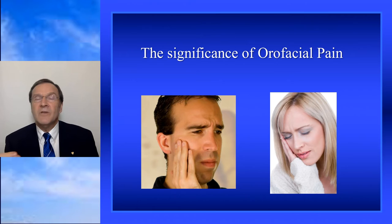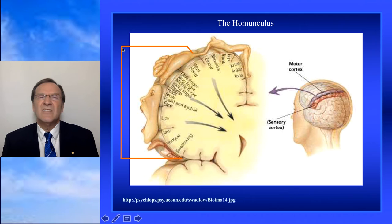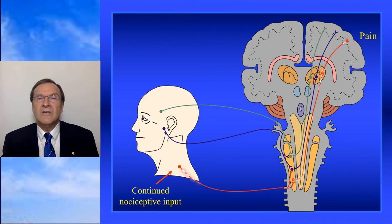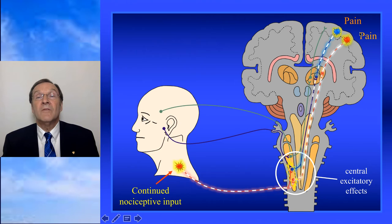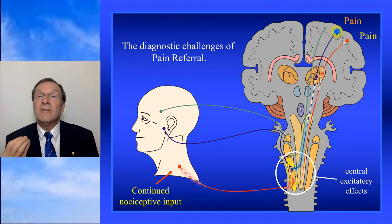We'll talk about the significance of oral facial pain. Looking at our sensory cortex — the homunculus — when we section through it, 65 to 75 percent of our sensory cortex is dedicated to two structures: our hands and our face. Pain in these structures is very clinically and emotionally significant. We'll also talk about the concept of pain referral — how pain coming from one source can be felt somewhere else — and this occurs in the head and neck very frequently. Dentists need to appreciate this to treat the source, not just the site.